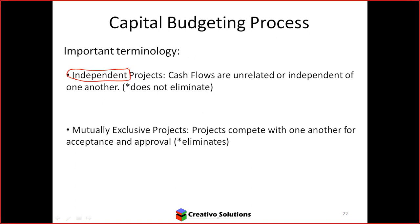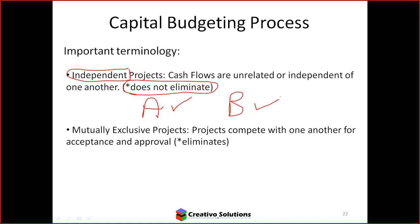When looking at independent projects, the one does not eliminate the other. So can I accept more than one project — can I accept A and B if they're independent? Yes. You could have bought the new tablet and you could have taken the new job as well, because they're independent.